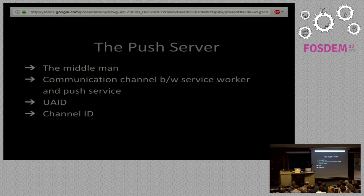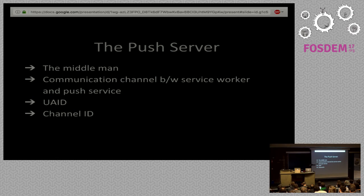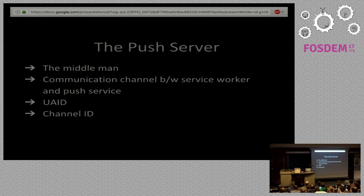Talking about the UAID — the User Agent ID — there is a communication channel between the browser and the web push server, and that channel is recognized with the UAID. So if a particular user has given permission for push notifications, the server will be able to send information using this UAID to your browser. When the browser receives the information, it has to be sent to the service worker that is involved. To send that information to the correct service worker, the browser identifies it through a channel ID, and through the channel ID, the service worker is able to receive the information.